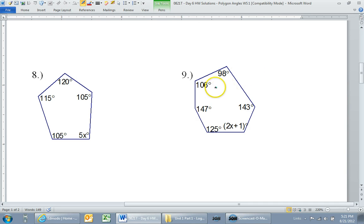So let's look at number 9. What kind of shape is this? Let's see, I've got 1, 2, 3, 4, 5, 6 sides. So this is a hexagon.